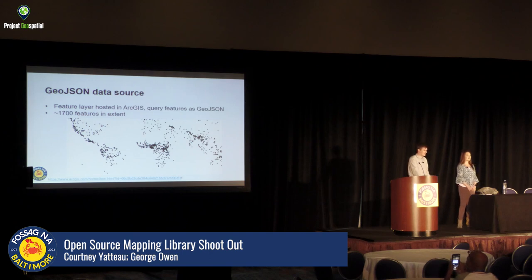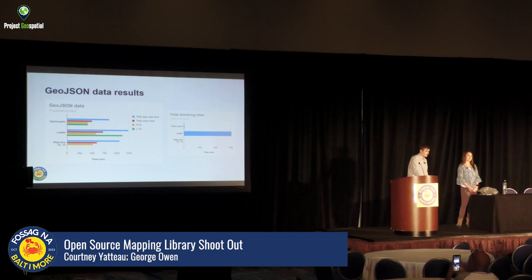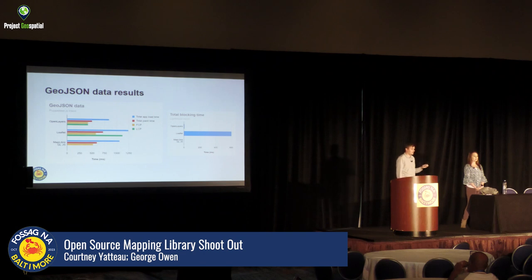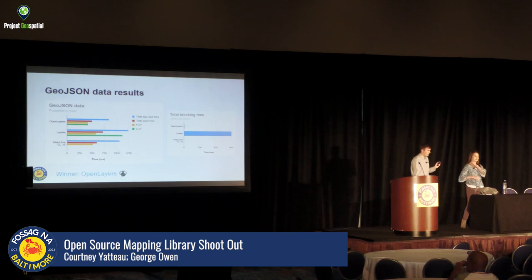Our final data rendering test is GeoJSON — a really common format. We're looking at a worldwide points layer with about 1,700 points drawn onto the screen. OpenLayers actually takes this one, with the lowest paint time and lowest overall time. Leaflet takes the longest because it draws SVG markers by default — using circle markers would likely be much faster. Leaflet's total blocking time is over 600 milliseconds, which is not good. Loading large amounts of GeoJSON is probably best handled in OpenLayers.